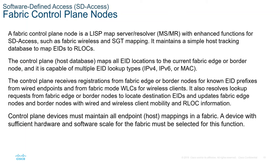The Fabric Control Plane Node is a LISP Map Server and Resolver or MSMR with enhanced functions for SD-Access, such as Fabric Wireless and SGT mapping. It maintains a simple host tracking database to map EIDs to their locators. The Fabric Border Nodes are LISP Proxy Tunnel Routers or PXTRs that connect external Layer 3 networks to the SD-Access fabric, translating reachability and policy information such as VRF and SGT information from one domain to another. There are three types of Border Nodes: Internal Border, Default Border, and Internal plus Default Border.